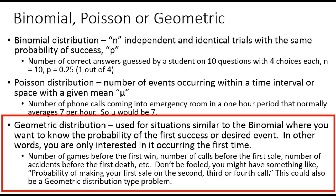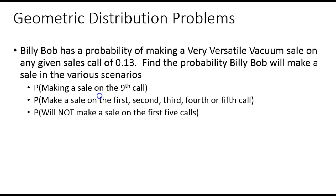I do have a geometric distribution calculator. That file will be available on the StatCave website for download for you to use. Let's look at a problem that you would use this on. Let's say Billy Bob has a probability of making a very versatile vacuum sale on any given sales call of .13. Find the probability Billy Bob will make a sale in the various scenarios.